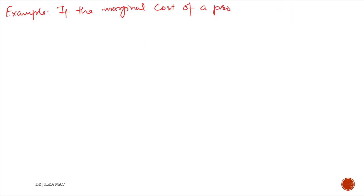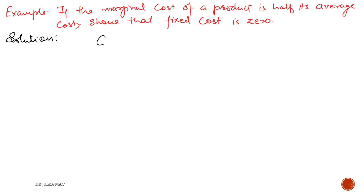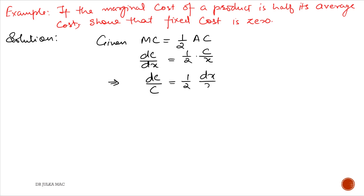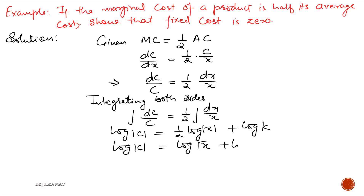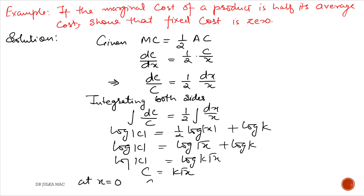Next example: If the marginal cost of a product is half of the average cost, show that fixed cost is 0. It is given that marginal cost equals half of average cost. Marginal cost is the derivative of cost with respect to x, and average cost is C divided by x. Separating variables: dC upon C equals half of dx upon x. Integrating both sides: log|C| equals half log|x| plus log k. Using log rules, this becomes log|C| equals log(k√x), so C equals k√x. At x equals 0, cost is 0, so fixed cost is 0.